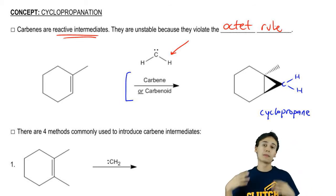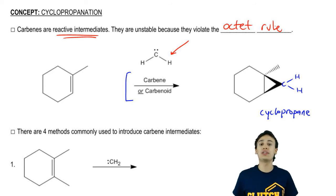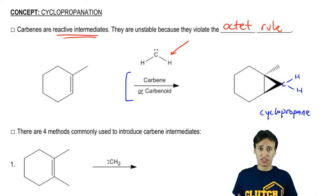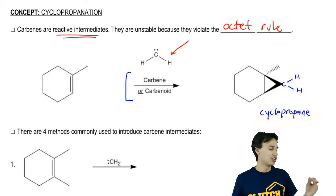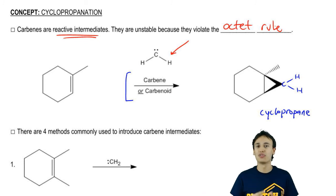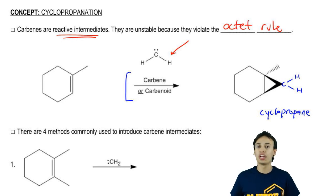It has that lone pair and those two bonds — it's missing two whole electrons. So carbenes are going to be extremely reactive with pretty much everything, including double bonds, which is why they're going to work to make these triangle-shaped products. What I'm going to do is go one by one down the list of all the reagents that can make a cyclopropanation.